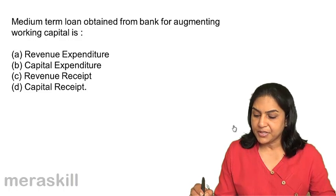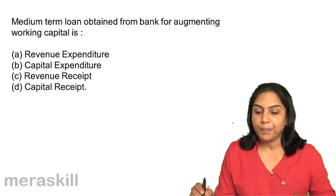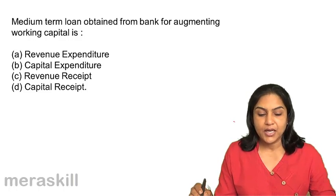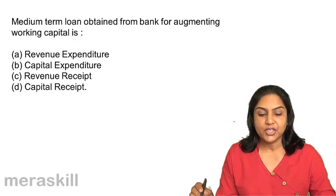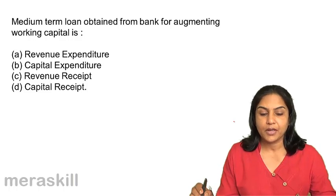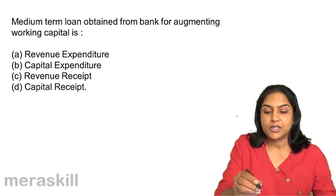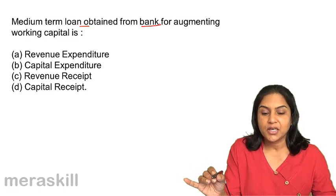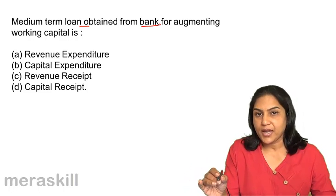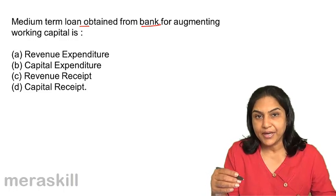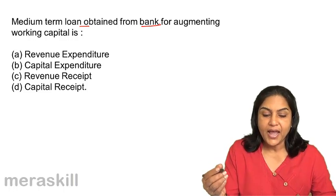Next. A medium-term loan obtained from a bank for augmenting working capital is A: revenue expenditure; B: capital expenditure; C: revenue receipt; D: capital receipt. It is a loan obtained from the bank — it has improved the working capital position but it is a loan and a liability, so the money has to be repaid. Therefore it is a capital receipt. Correct answer is D.